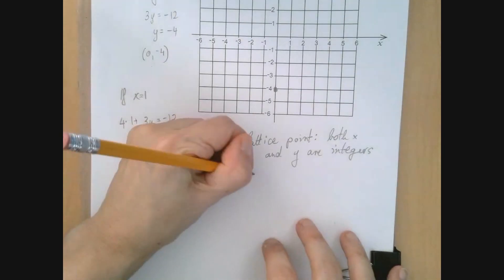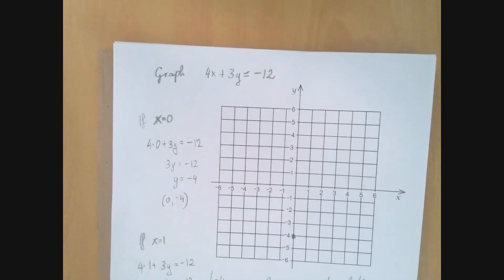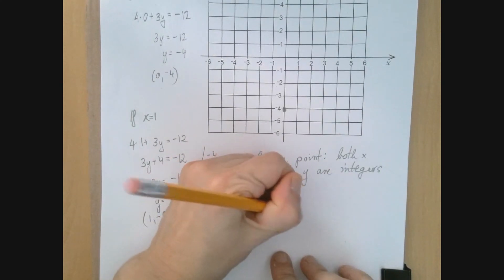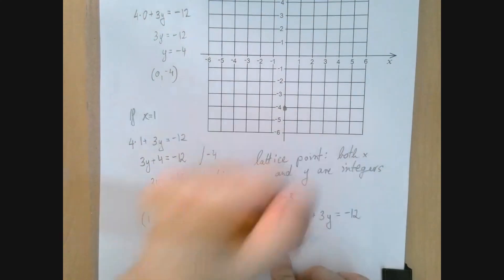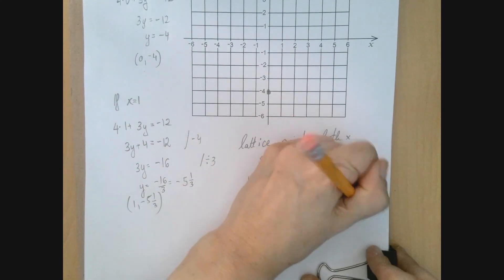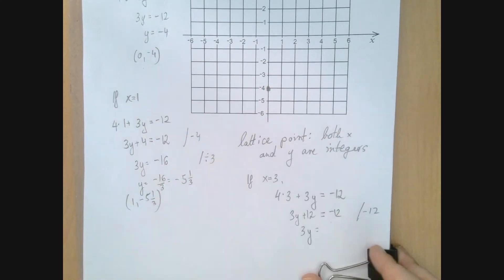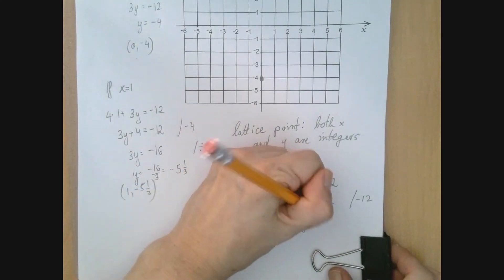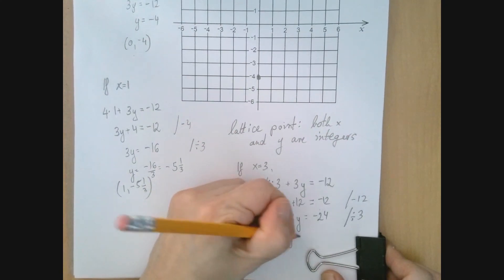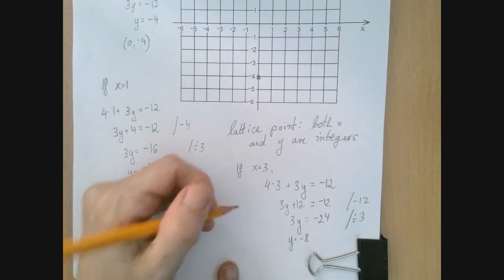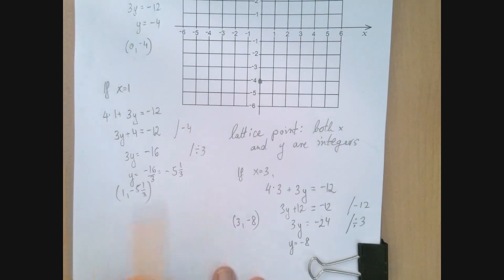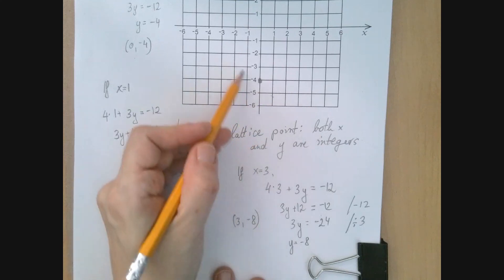Let's see. So if x is 3, then the equation 4x plus 3y equals negative 12 will become 4 times 3 plus 3y equals negative 12. So 3y plus 12 equals negative 12. We subtract 12, so 3y is negative 24. And that is divisible by 3, although we're running into other issues. So y is negative 8. So we found the point (3, -8). Now 3 negative 8 is off the paper. But (1, -5⅓) sort of makes sense, right?